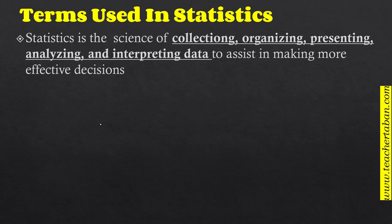The most important words in that definition are highlighted: statistics is about collecting data, organizing the collected data, presenting that organized data, analyzing it, and then interpreting it. The word 'data' simply means numbers — and this world is filled with numbers. The work we have to do is to make meaning of those numbers. By the end of this topic you should be able to collect, organize, present, analyze, and interpret data.